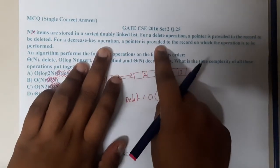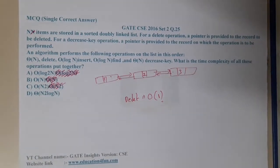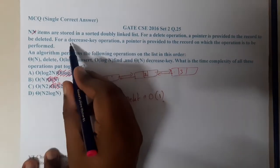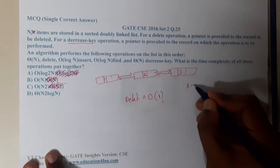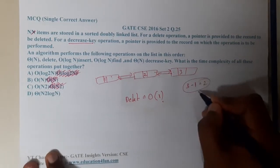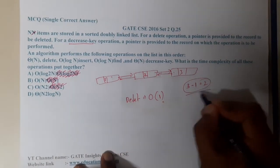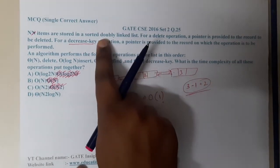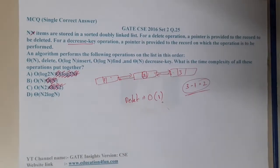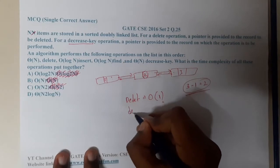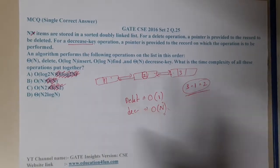For a decrease-key operation, a pointer is provided to the record on which the operation is to be performed. So what decrease-key will do — if we have a value of 3 and you call decrease-key, it will do minus 1. But there is a small catch: the list must remain sorted, and if you decrement one value, the list might be shuffled. That is the catch, and that is the reason why decrease-key becomes O(n).